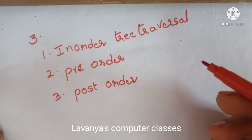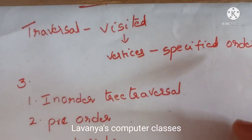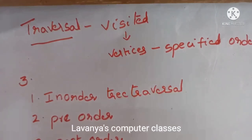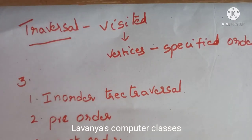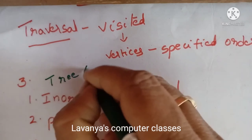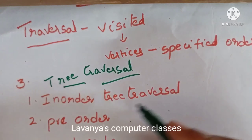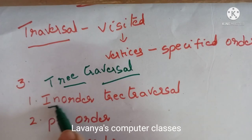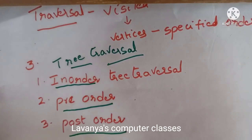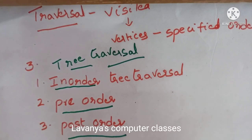Traversal means visiting each node in a specified order. There are three tree traversal methods: in-order, pre-order, and post-order. We will explain what these three methods are with full explanation.